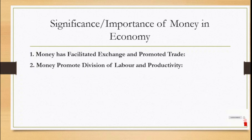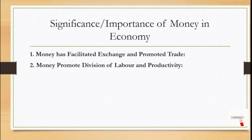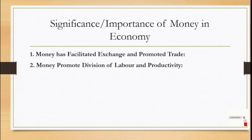Second point: money promotes division of labor and productivity. Money is of great importance as it promotes division of labor and productivity in modern economics. Since under the barter system exchange was difficult, a man had to be self-sufficient, that is, he produced most of the goods for himself. In the absence of money, there were great difficulties in the exchange of goods and services. This worked as an obstacle to division of labor and specialization among various individuals and nations. Since the application of money, it has promoted division of labor and productivity and has enhanced the economic structure of the system.